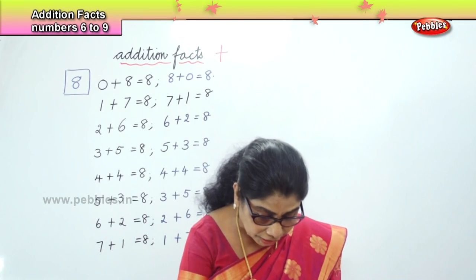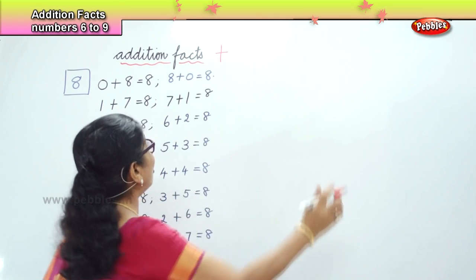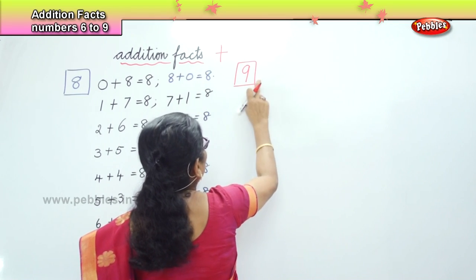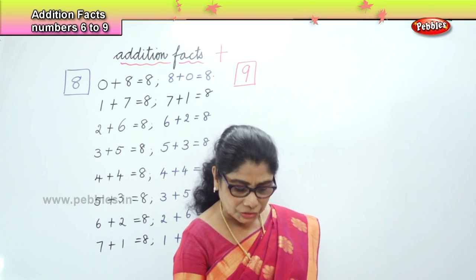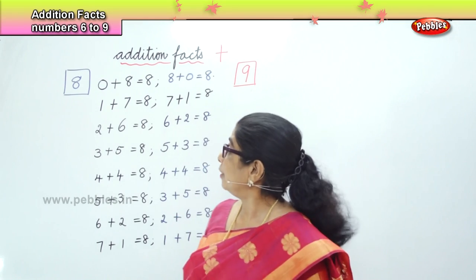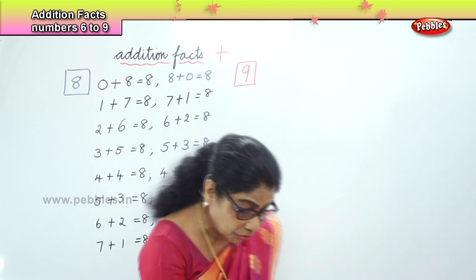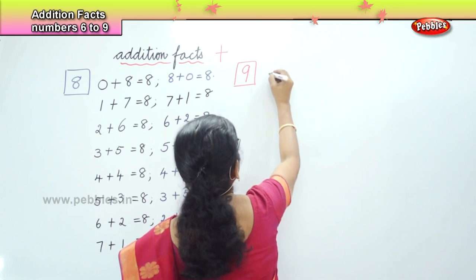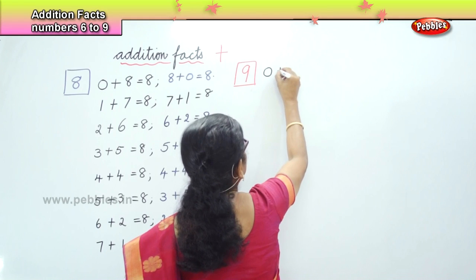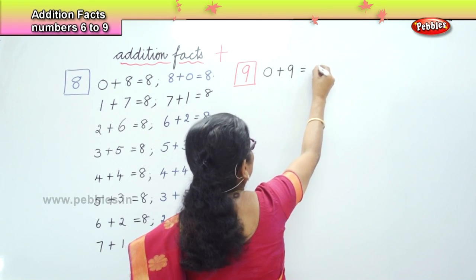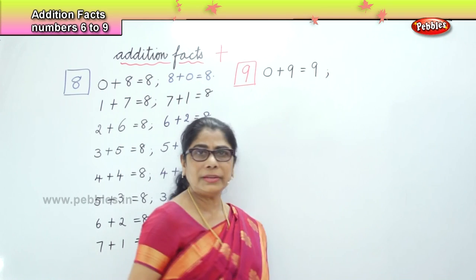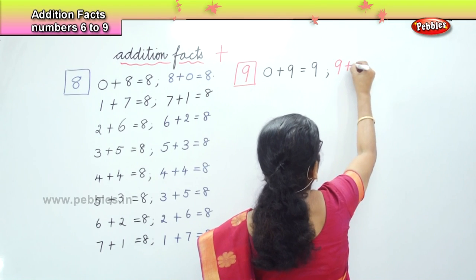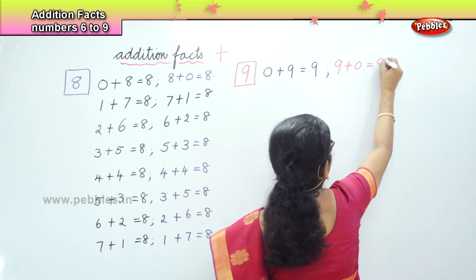Now let's do the addition fact and the number combination of number 9. We begin with 0 plus 9 is equal to 9. And the reverse: 9 plus 0 is equal to 9.